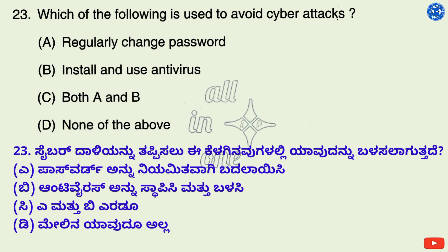Question 23. Which of the following is used to avoid cyber attacks? Options: A. Regularly change password, B. Install and use antivirus, C. Both A and B, D. None of the above. Right answer is C: Both A and B.